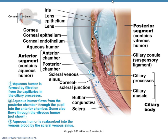Aqueous humor is constantly being made and constantly being drained through the scleral venous sinus — another name for it is the canal of Schlem. We're constantly making it and constantly draining it for new fluid. The other thing they talk about is the lens, and we'll pick up with the lens on Thursday.